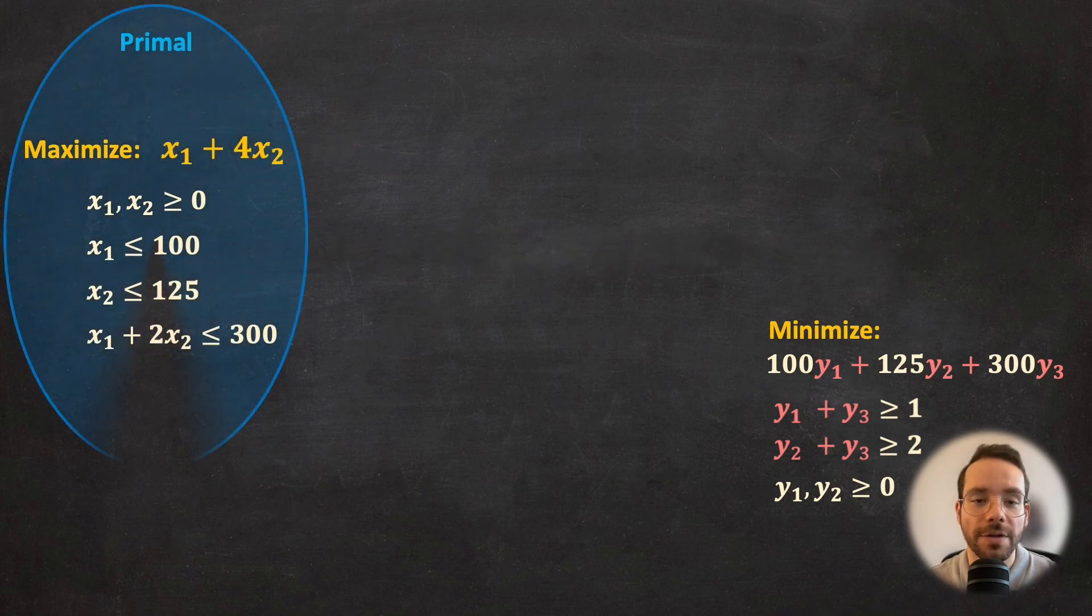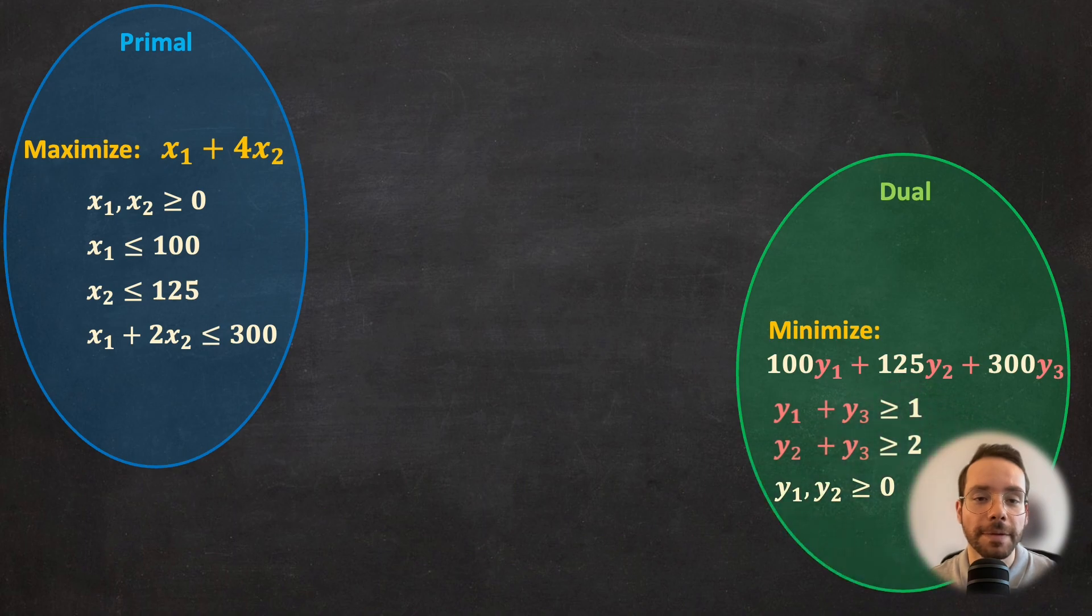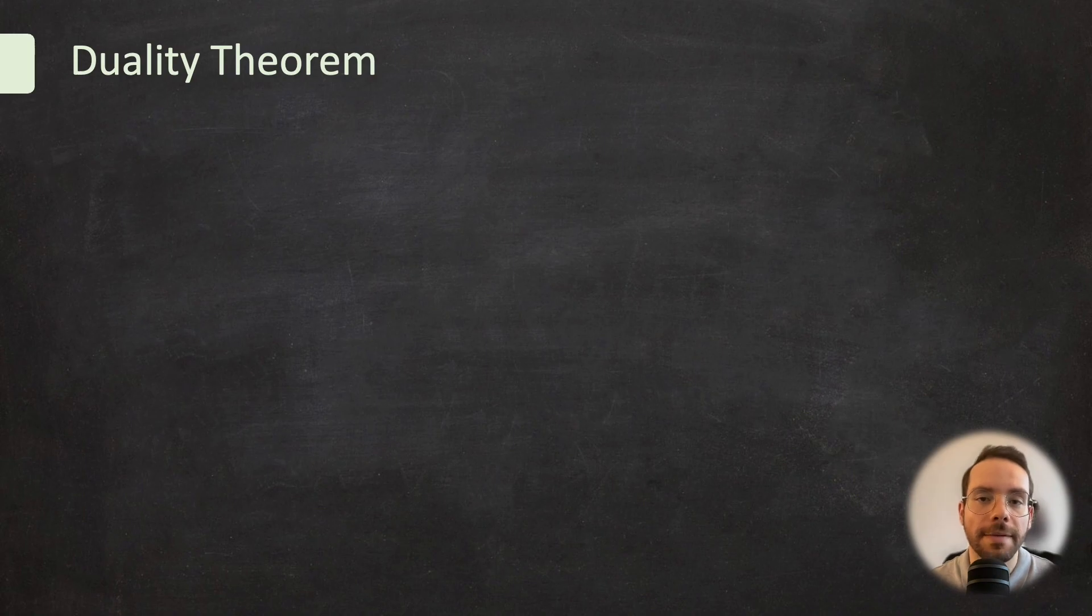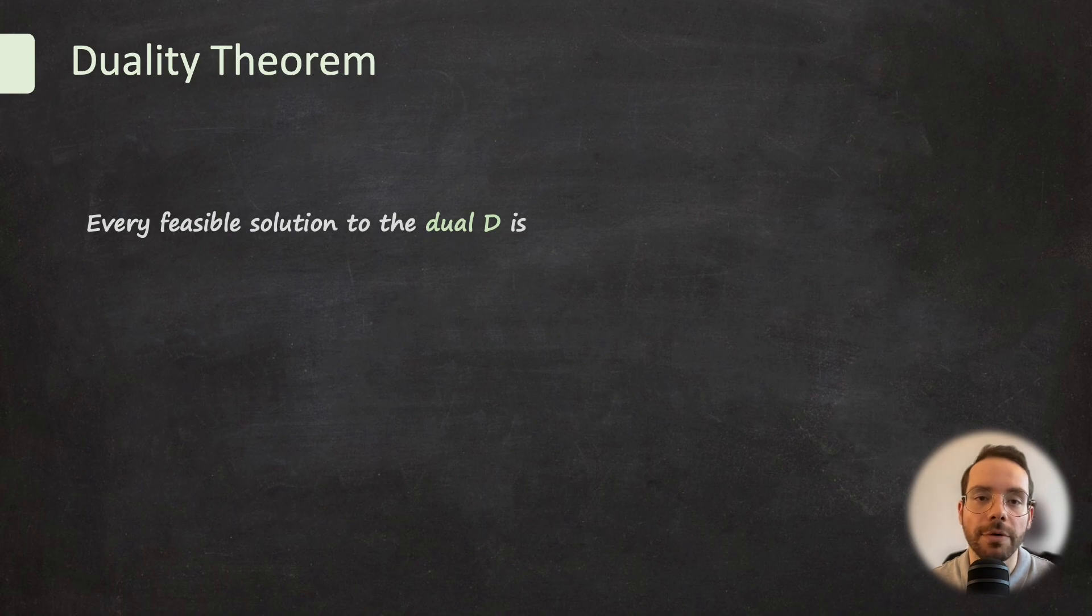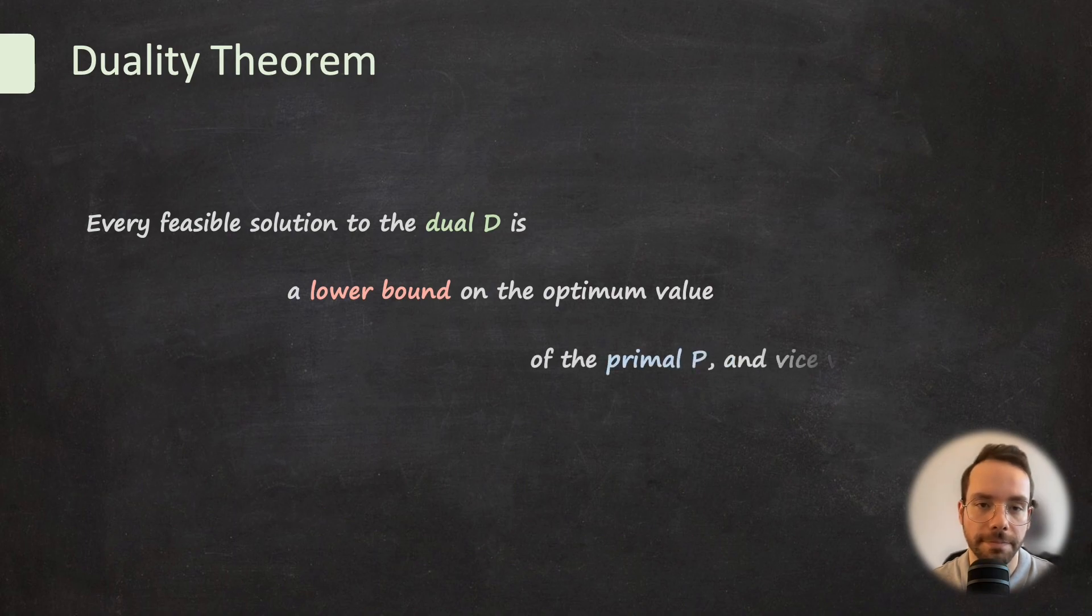We're going to call the first one the primal problem and the second one the dual problem. Duality is one of the most fundamental concepts in linear programming. The duality theorem states that every feasible solution to the dual problem d provides a bound on the optimal value of the primal problem p. This relationship is fundamental in linear programming and has profound implications for optimization.